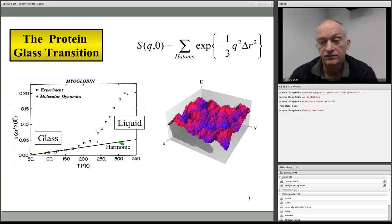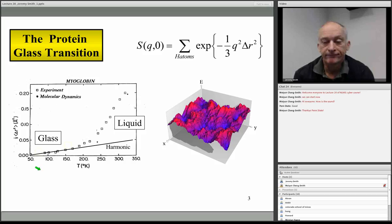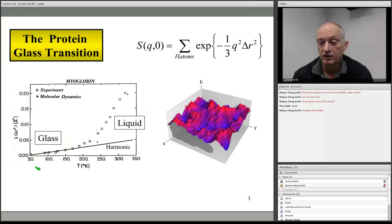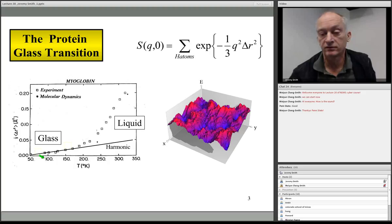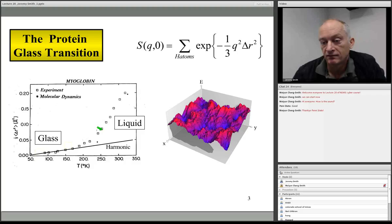The linear dependence of mean square displacement on temperature is consistent with harmonic motion — vibrations. Those who are really clever will realize that even in the harmonic approximation, technically speaking the mean square displacement does not vary linearly with temperature for a quantum harmonic oscillator. However, these quantum corrections are small for biological systems above 50 Kelvin. Above the transition, the mean square displacements are larger than one would expect from a harmonic model, meaning extra displacements are taking place.